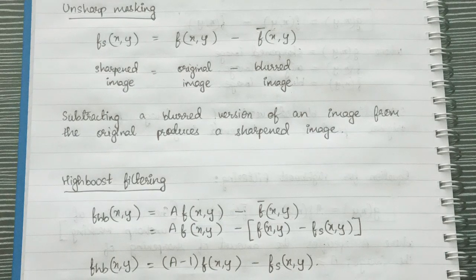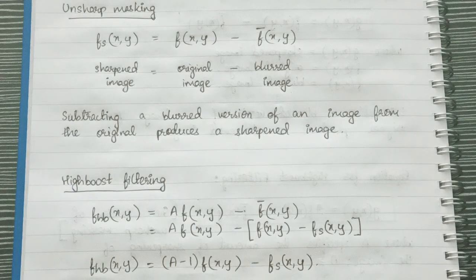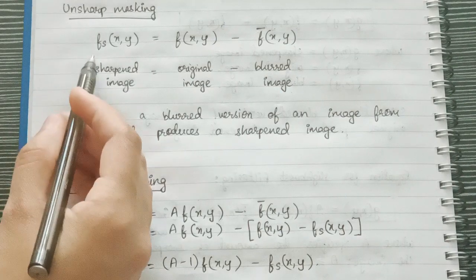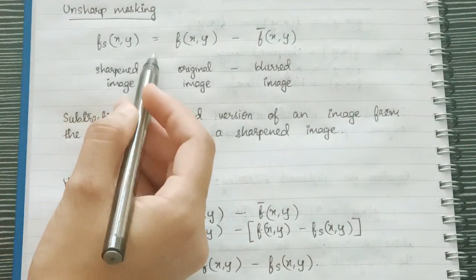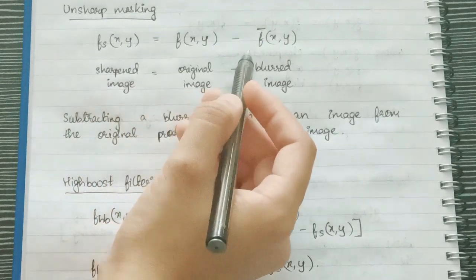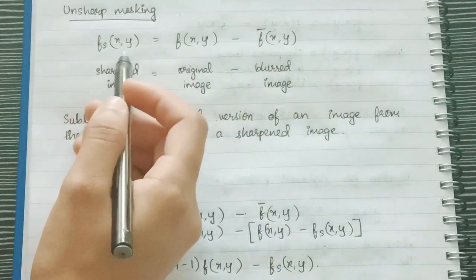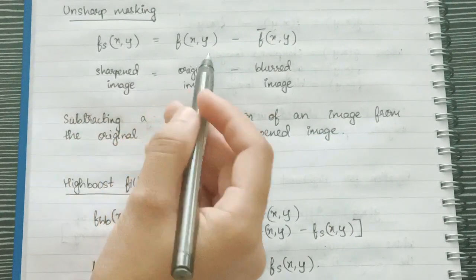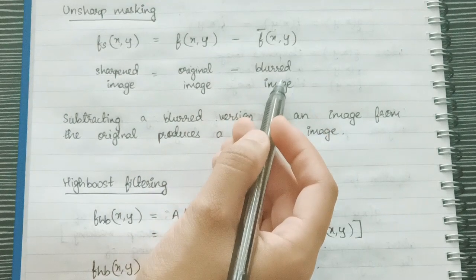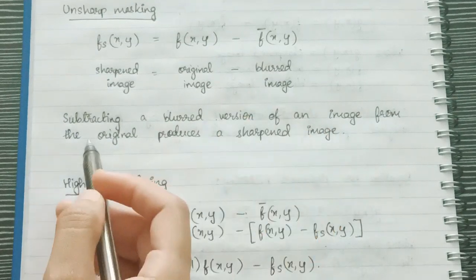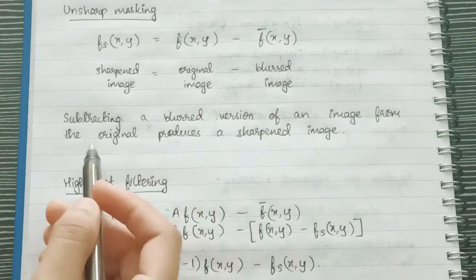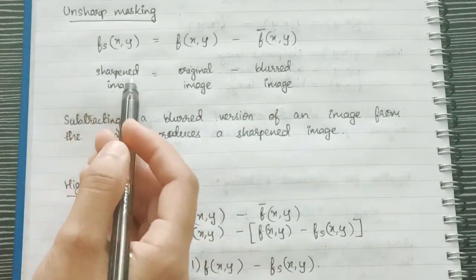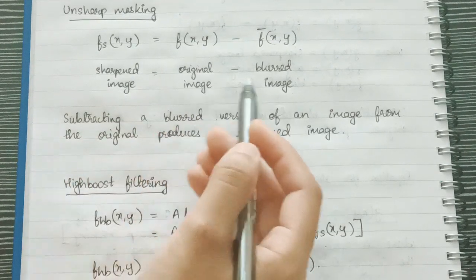Now let's understand this with the help of equations. The first one for unsharp masking we have fs(x,y) = f(x,y) - f'(x,y) where fs(x,y) is sharpened image, f(x,y) is original image and f'(x,y) is blurred image. So subtracting a blurred version of an image from the original image produces a sharpened image.